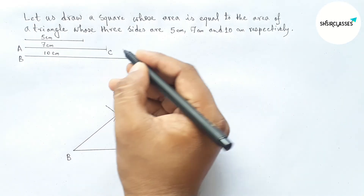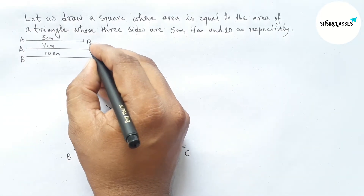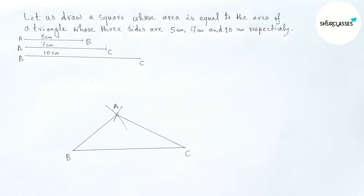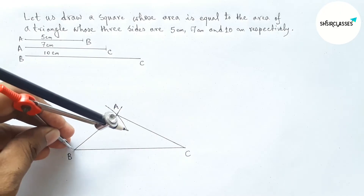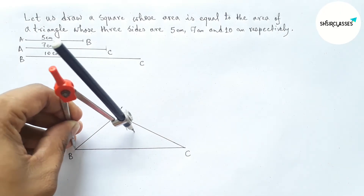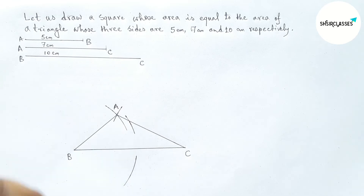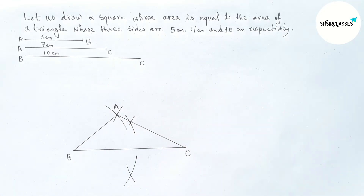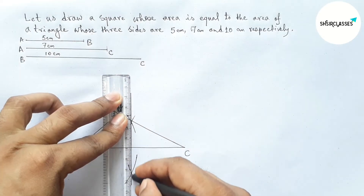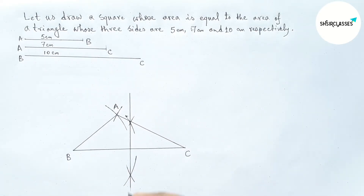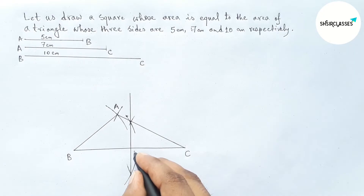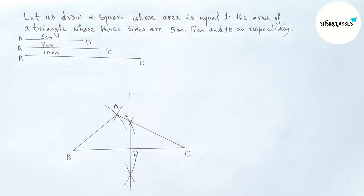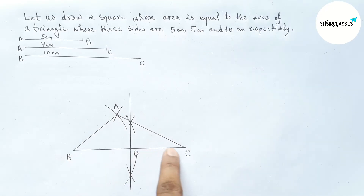Next, bisecting the line BC. Putting the compass on point B, taking greater than half of BC and drawing an arc. Now putting the compass on point C with the same length and cutting here. The bisector meets BC at a point, taking that point as D.